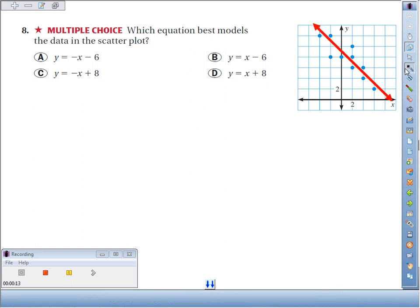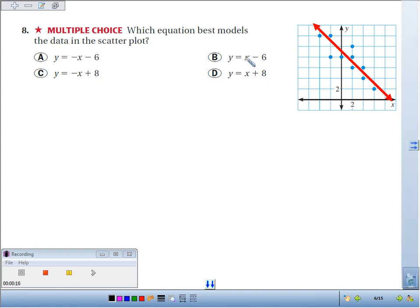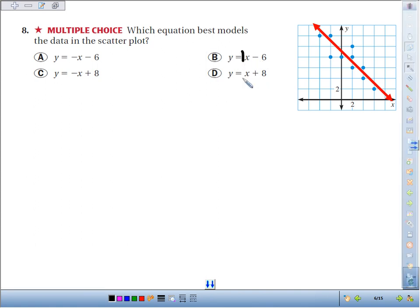Which means the line has to have a negative slope. So being a good test taker, I could automatically eliminate B because it's got a slope of positive 1, as well as D, it's got a slope of positive 1. So those are out of the question.